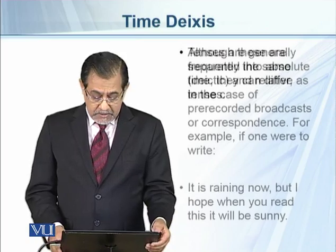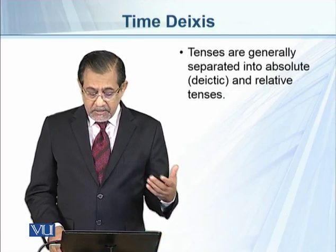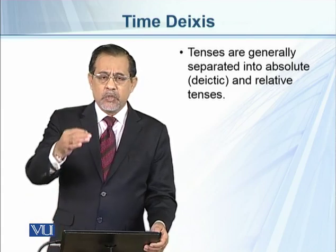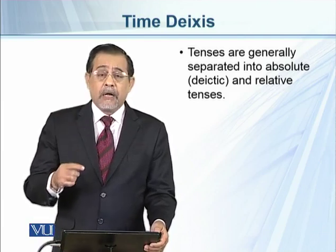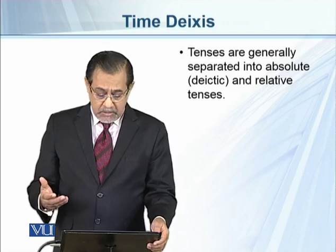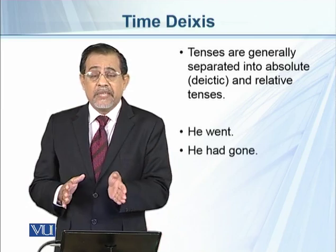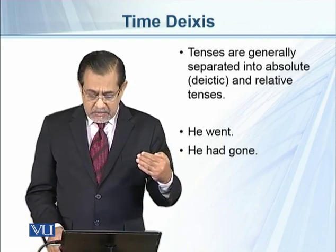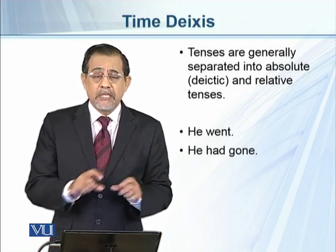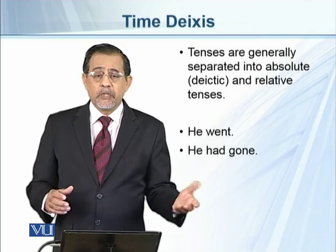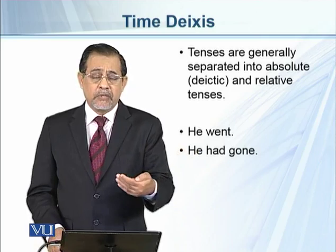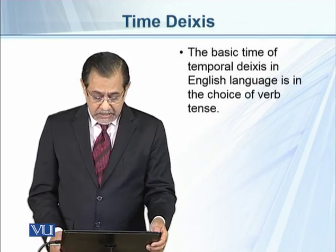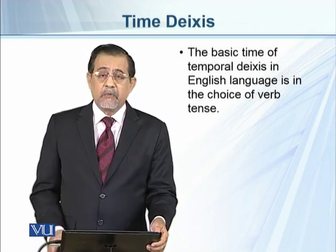Here, 'now' at encoding time is different from when this will be heard — the decoding time. Tenses are generally separated into absolute deictic and relative tenses. For example, 'he went' is used in the absolute deictic, also called absolute past. But 'he had gone' is used with reference to another tense — for example, 'when I reached home, he had gone.' The past perfect is used with reference to an absolute deictic tense.